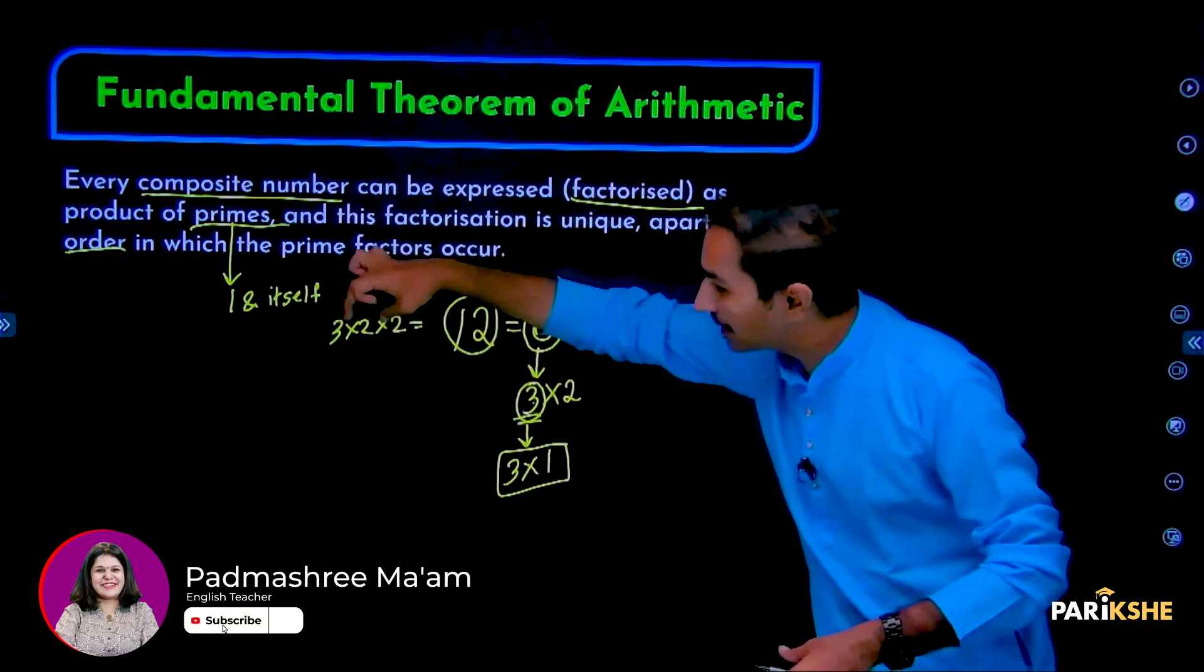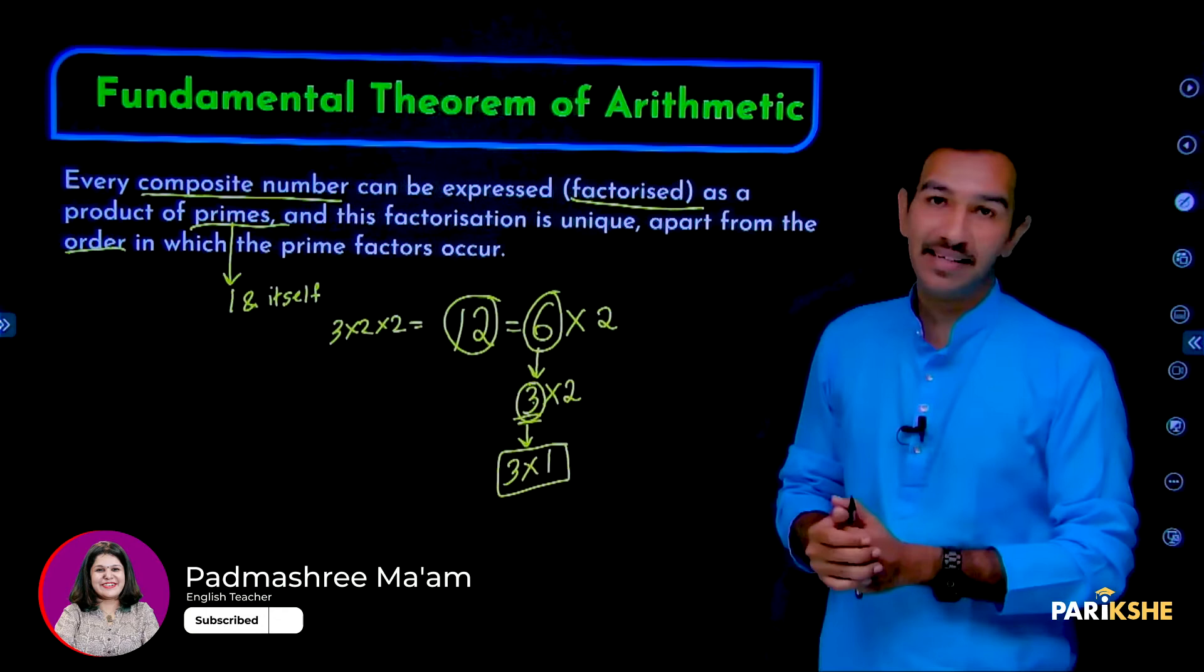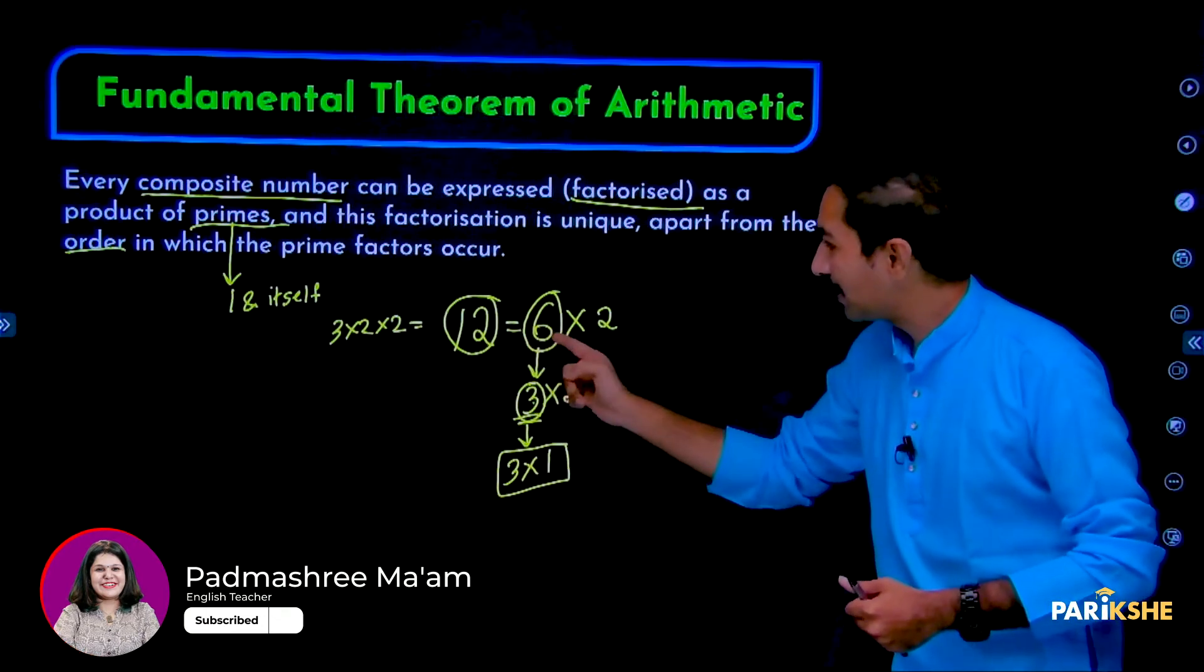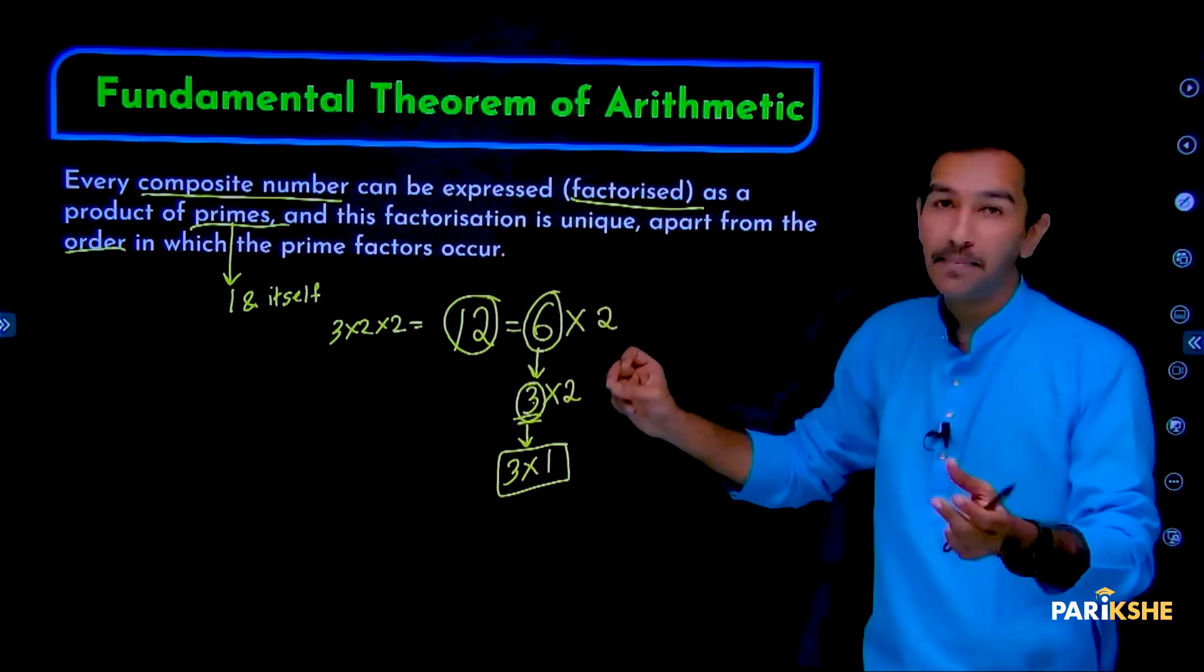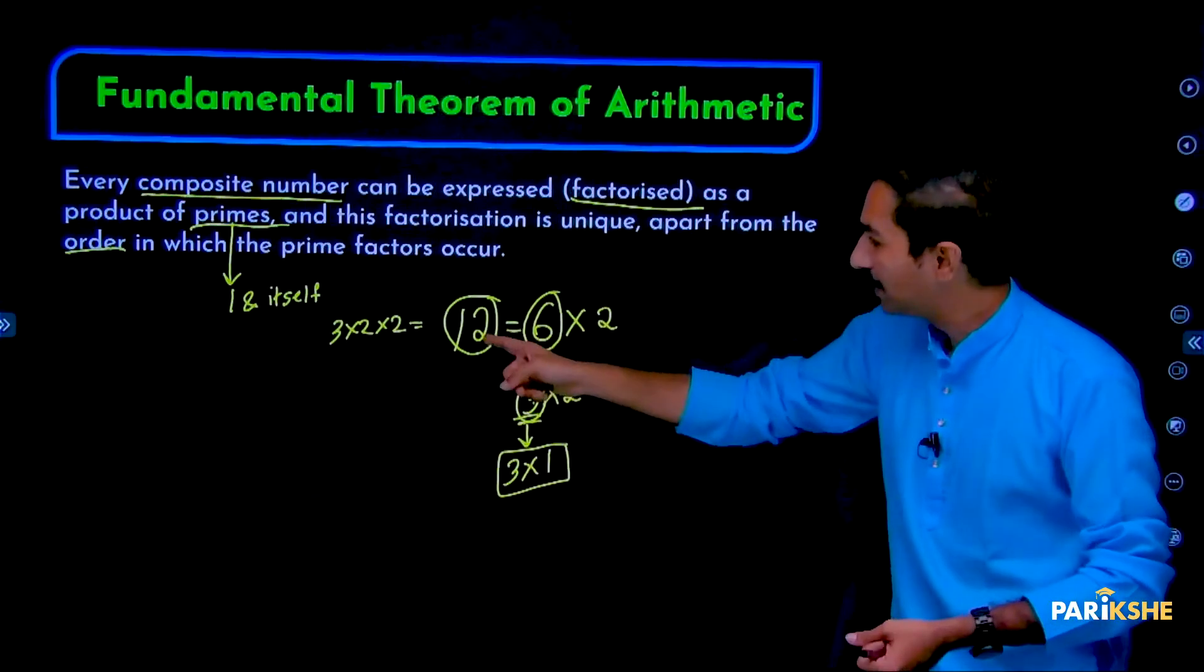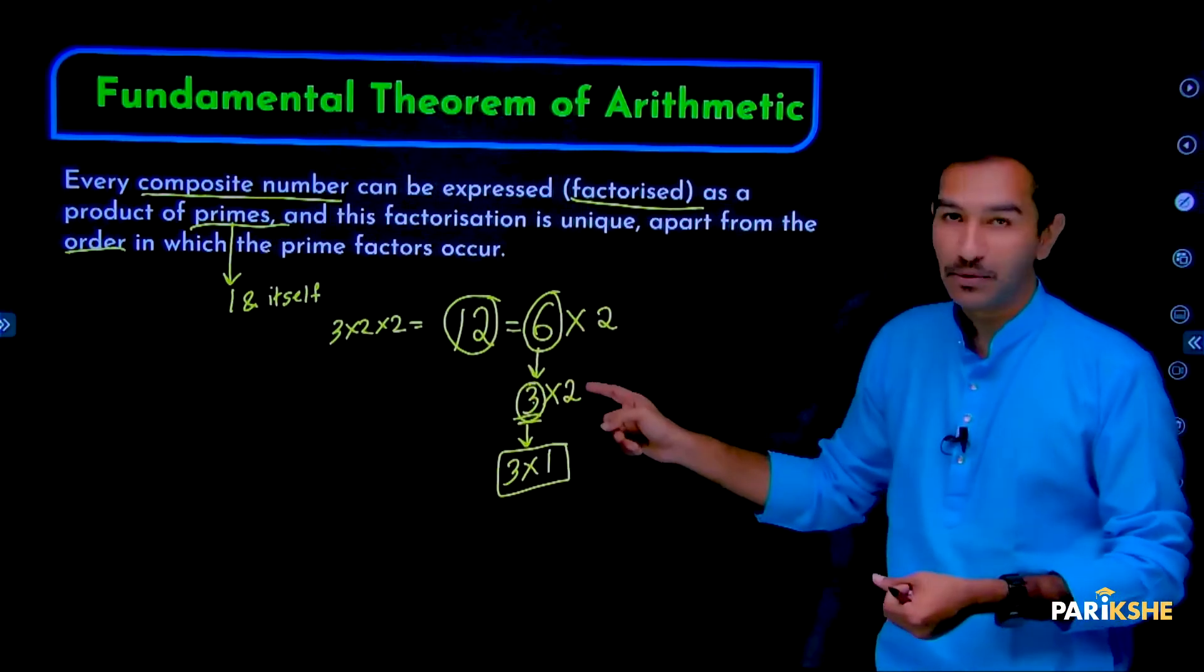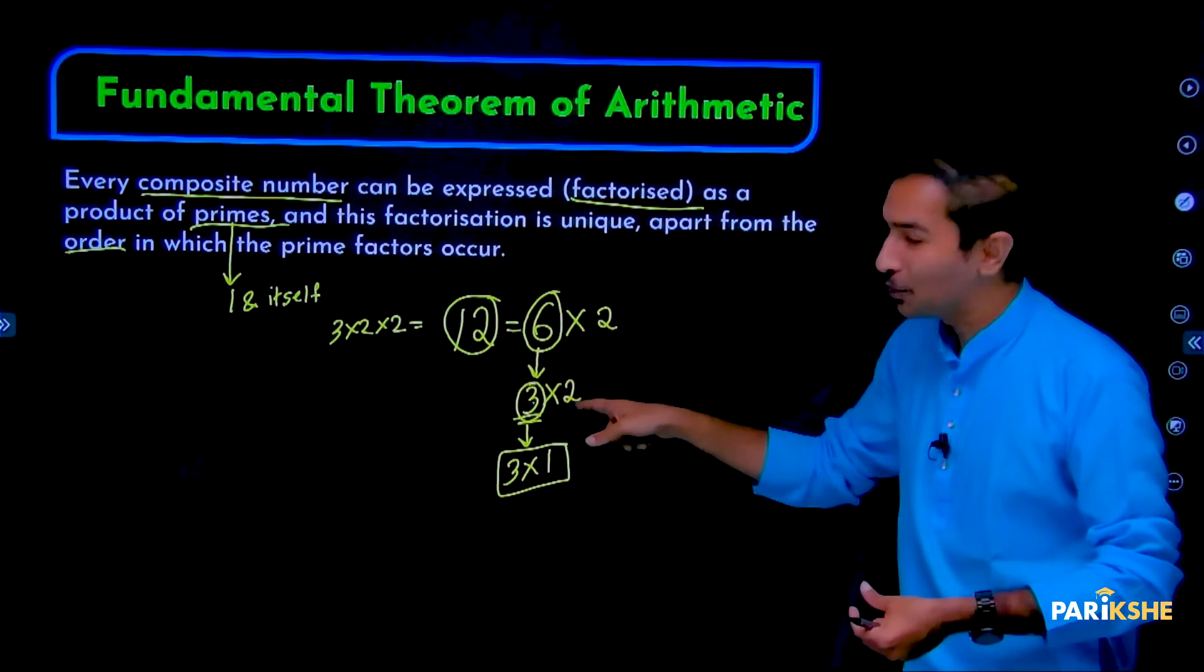So prime numbers are those that can only be expressed as the number times 1. Numbers like 6 and 12 are called composite numbers because they can be expressed as products of different numbers. For example, 12 can be written as 6 into 2, and 6 can be written as 3 into 2.